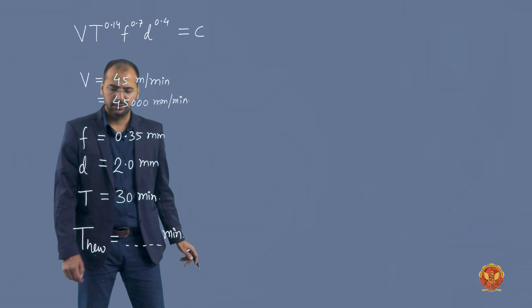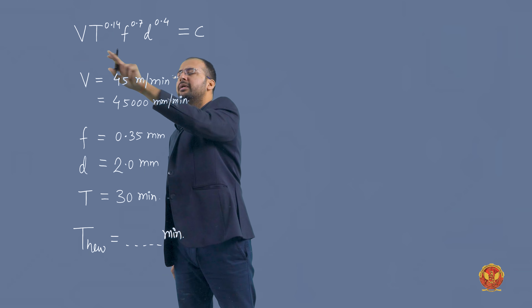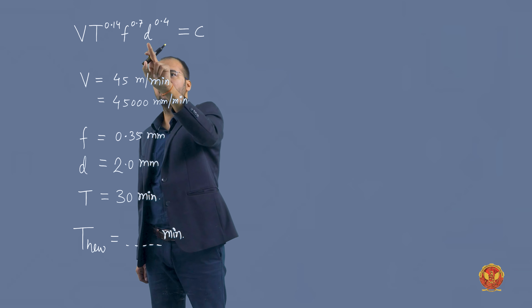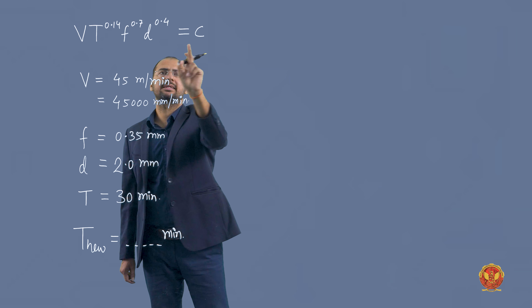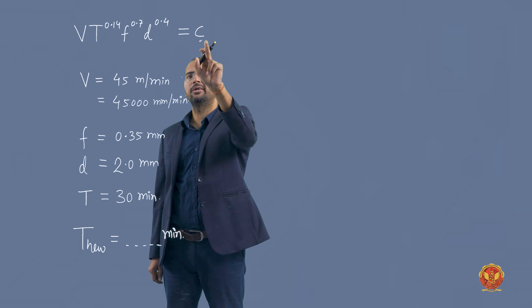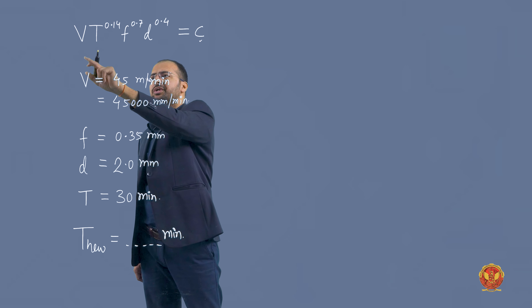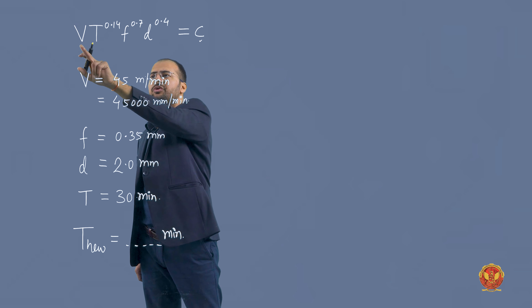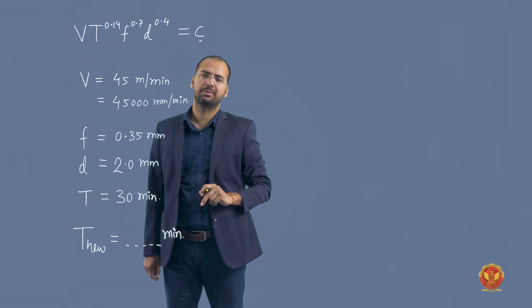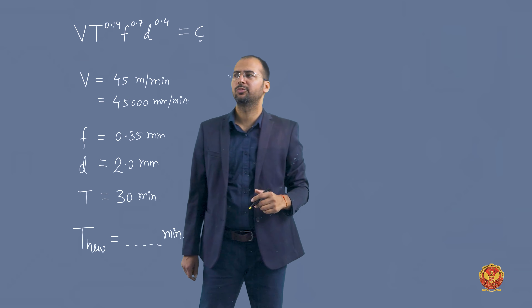This is the question. First, since all quantities — V, T, F, and D — are given in the tool life equation, we will first find the value of constant C. Once we have the constant, we will then find T_new by increasing V by 25%, F by 25%, and D by 25%. This way we can easily find the new tool life.